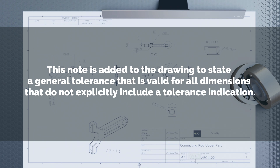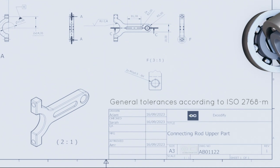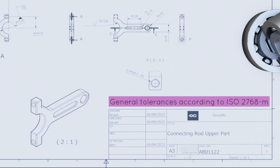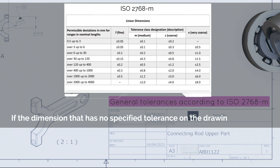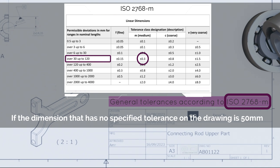This can be done by referencing a general tolerance standard, such as general tolerances according to ISO 2768 m. ISO 2768 specifies a tolerance for each length and angle in a table. For example, if a dimension that has no specified tolerance on the drawing is 50 mm, and the drawing references ISO 2768 m, then the valid tolerance is ±0.3 because 50 mm lies between 30 and 120 mm and the specification 'm' stands for medium.